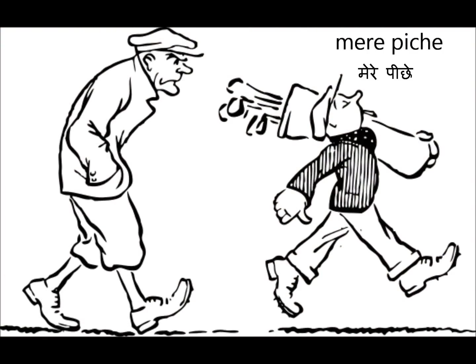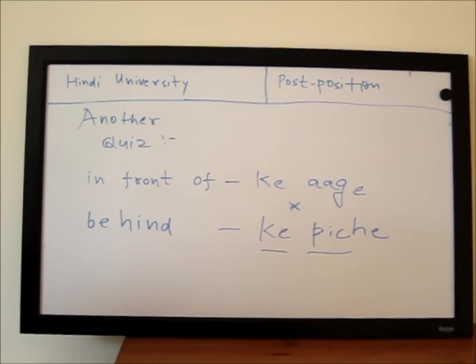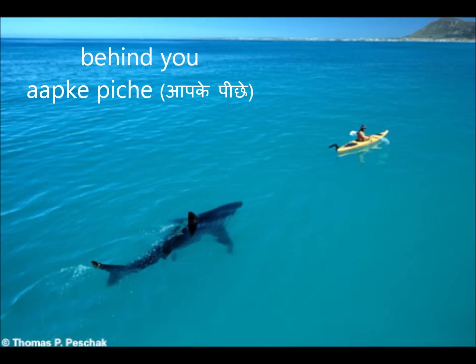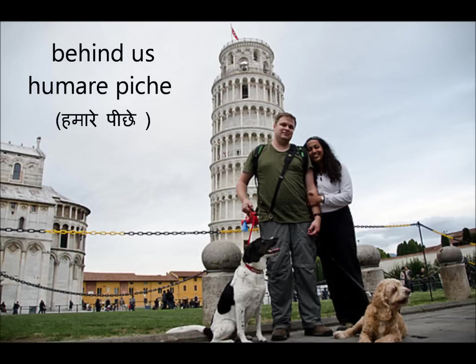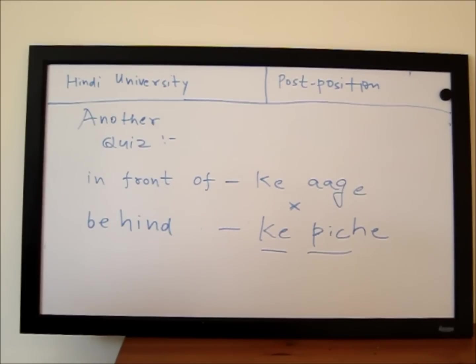For example: 'mere piche' means behind me, 'aapke piche' means behind you, 'humare piche' means behind us. And 'mere gar ke piche' means behind my house.